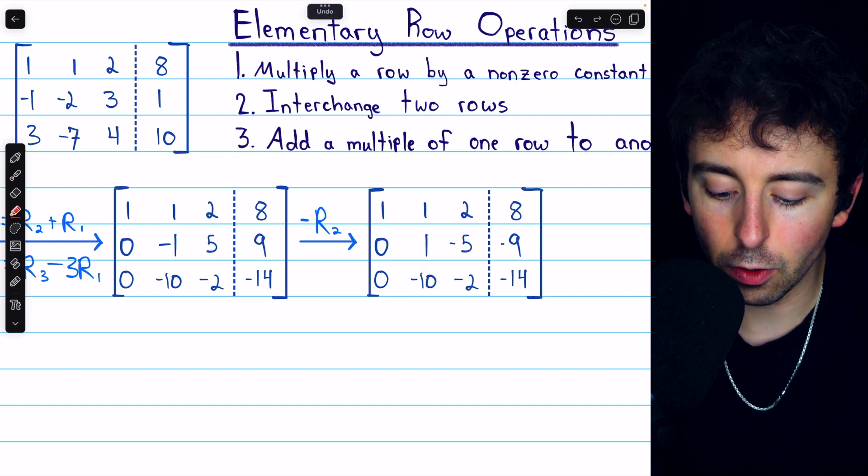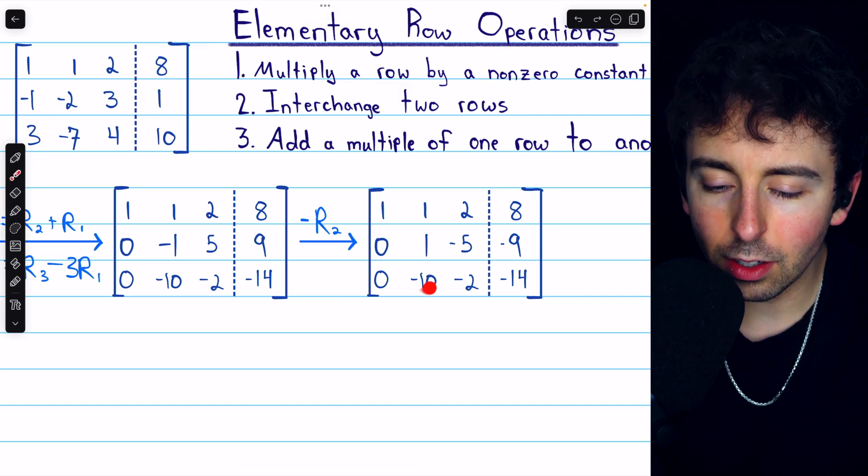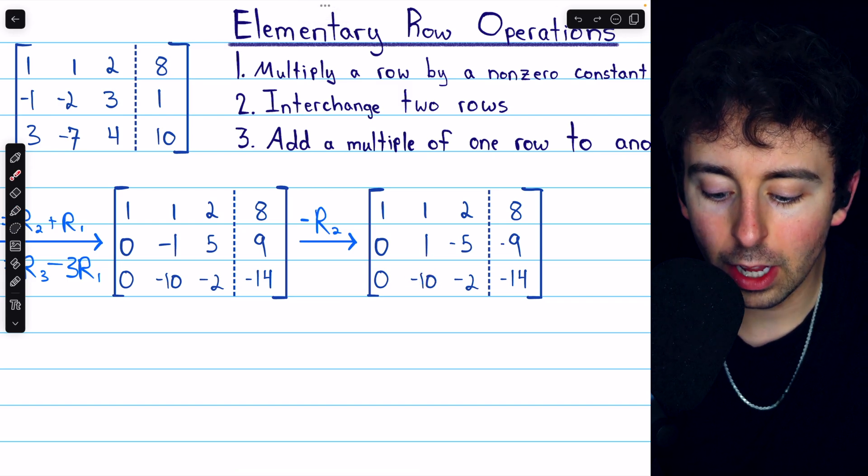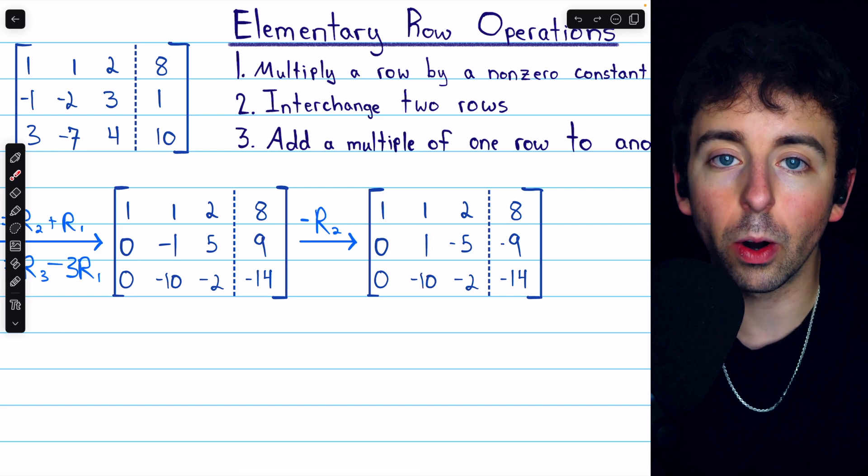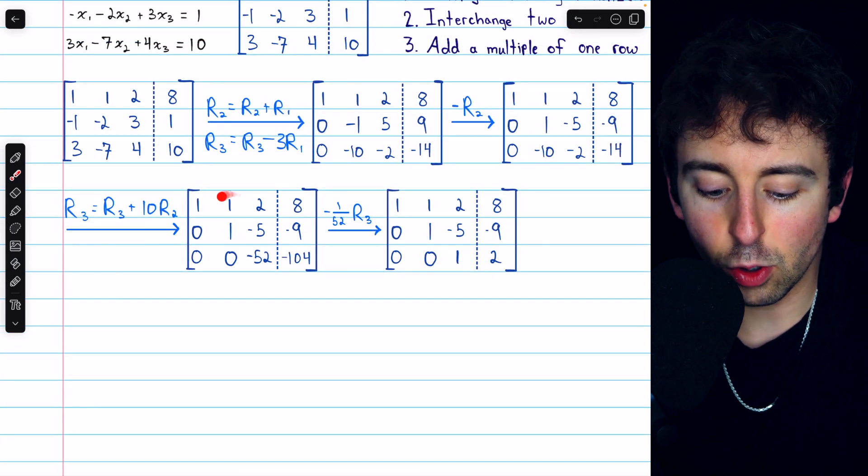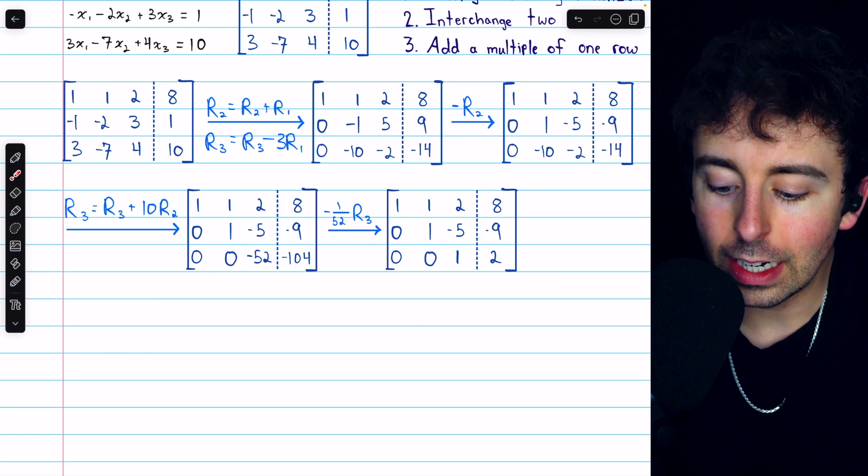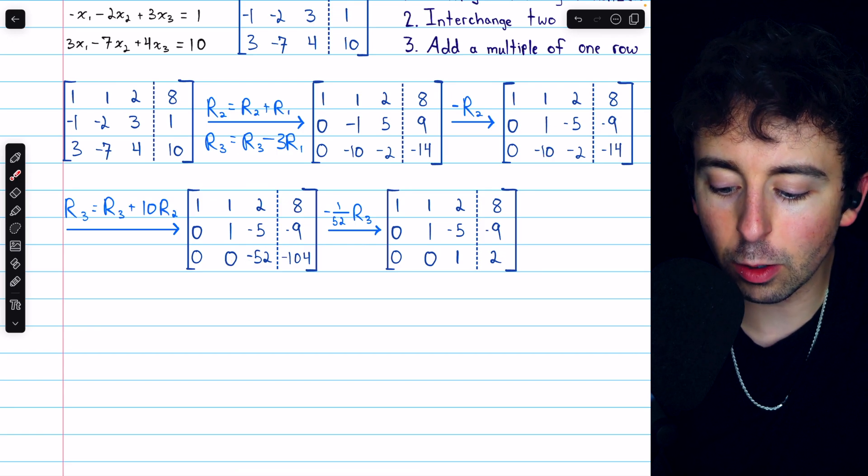Now we have a negative 10 here below this 1, and we want to turn that into a 0. So we'll add 10 copies of row 2 to row 3. And that gets us to this matrix here.